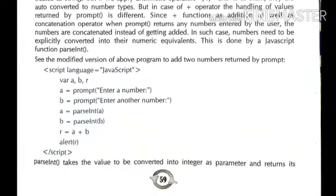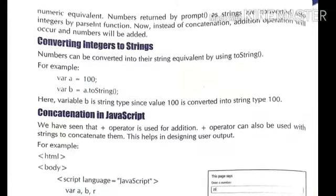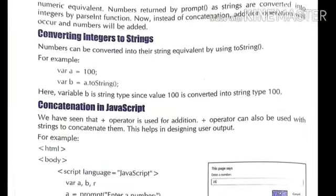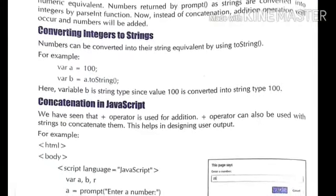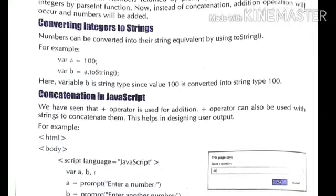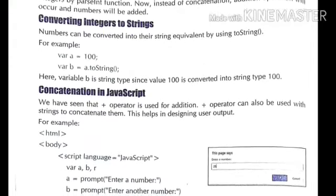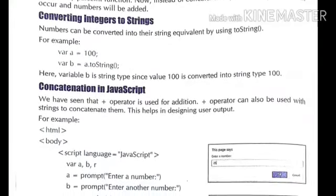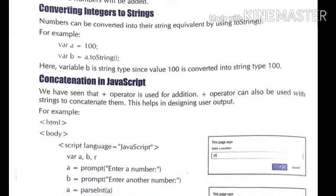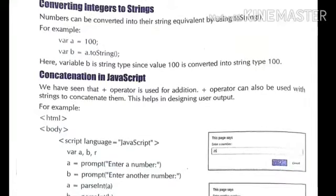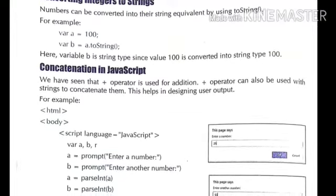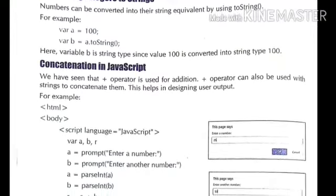Converting integer to string: numbers can be converted into their string equivalent by using the toString() function. To convert any integer type value to a string, we use the toString() function. For example, var a equals to 100 — a's value is 100. Then var b equals to a.toString() — the value stored in b will be a's value converted to a string using a.toString().